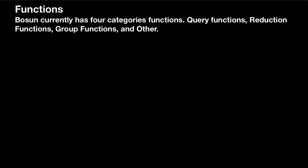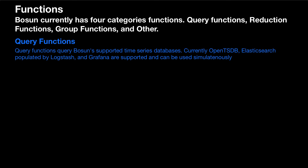We just saw some functions. Bosun currently has four categories of functions: there's query functions, reduction functions, group functions, and other. In this video, we're only going to talk about query functions and reduction functions. The group and other functions are for more advanced functionality. Query functions query Bosun-supported time series databases.